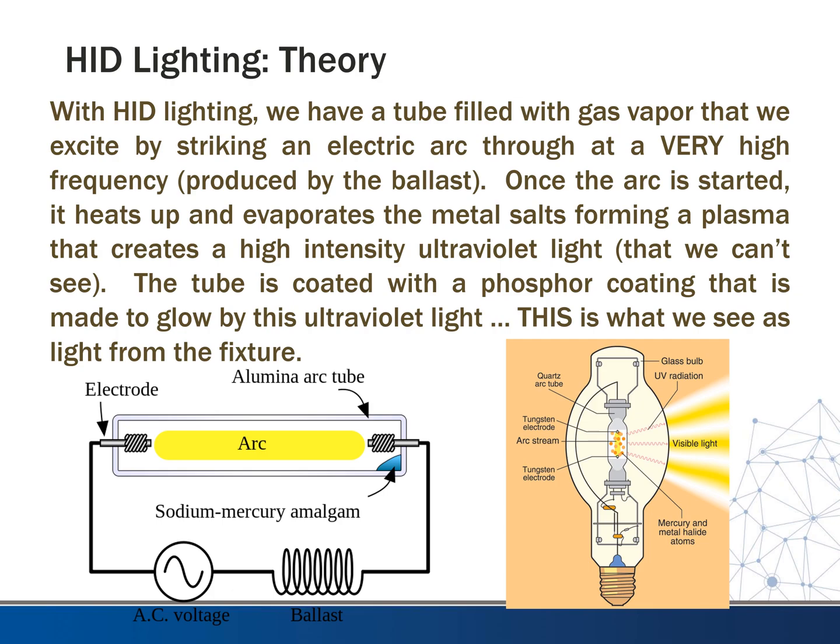Looking at the general theory: with HID lighting, we have a tube filled with a gas vapor that we excite by striking an electric arc through at a very high frequency. This is done with a ballast, much like with a fluorescent light. Once the arc is started, it heats up and evaporates the metal salts, forming a plasma. It creates a high-intensity ultraviolet light.